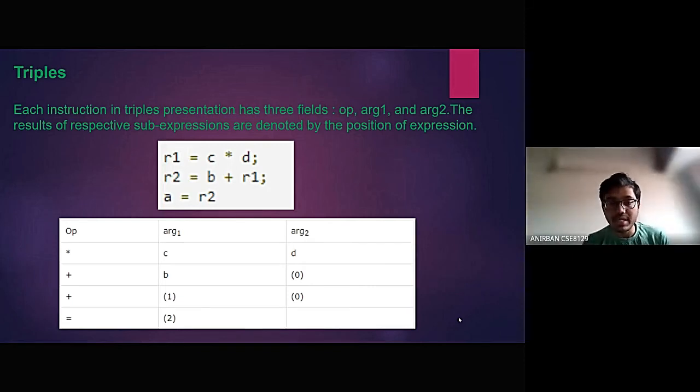In the third row, we have taken the 1st memory address and 0th memory address. And in the last row, we have taken the 2nd memory address to assign the variable.